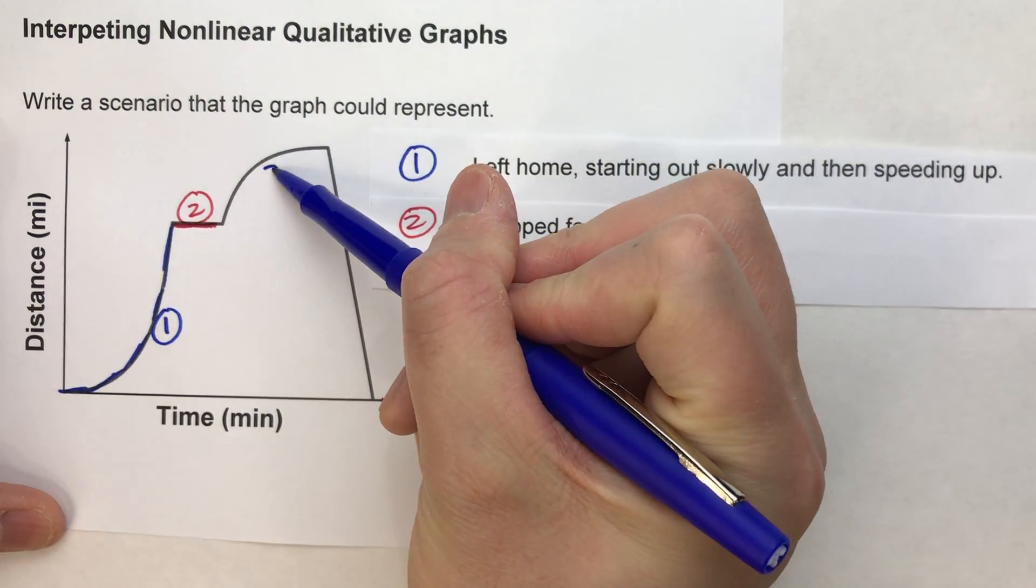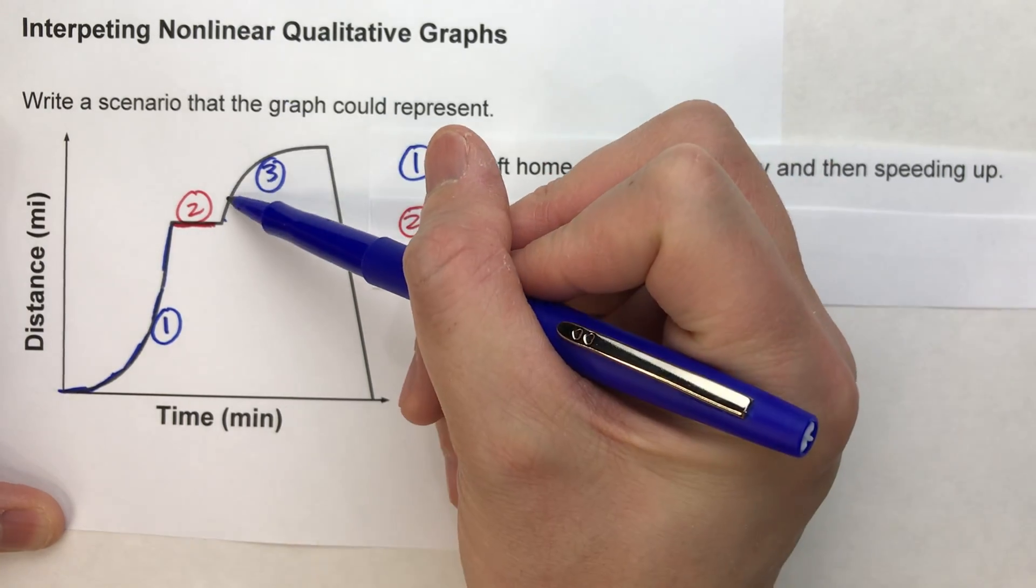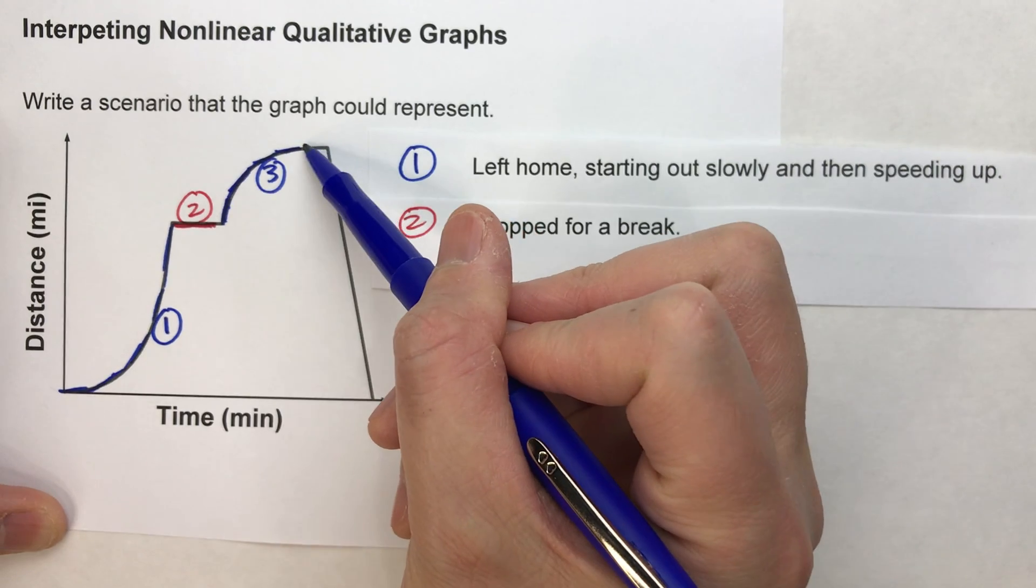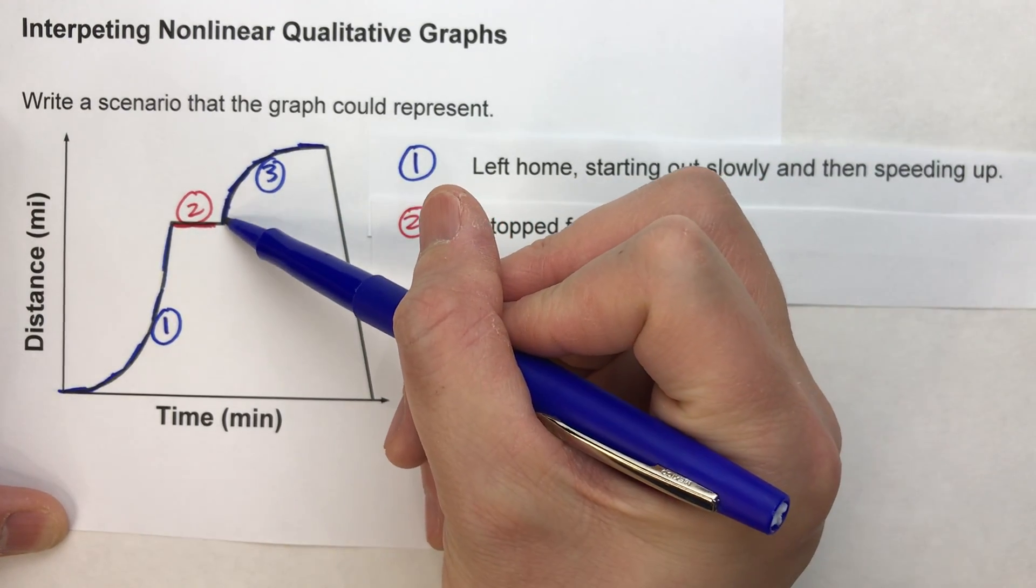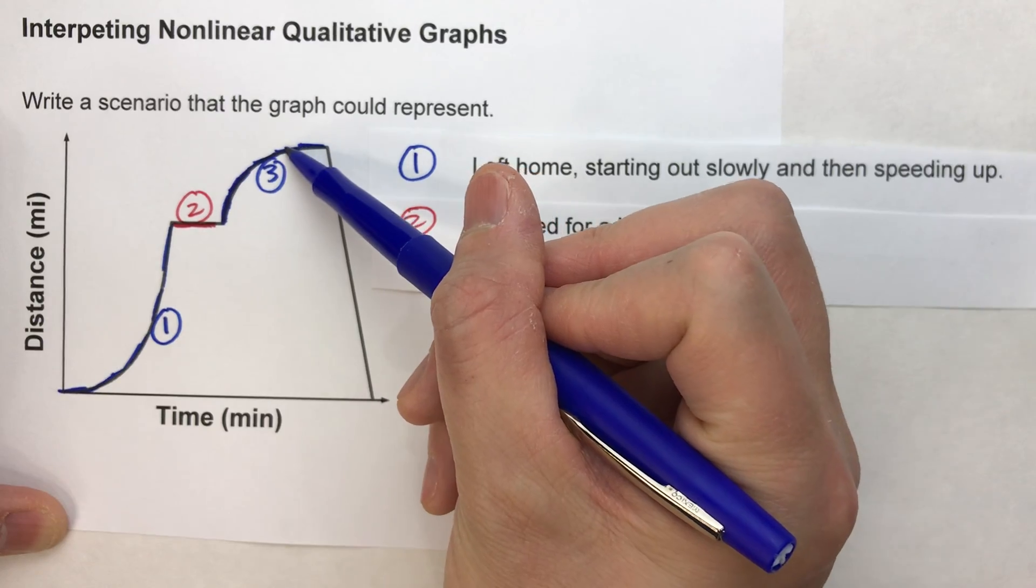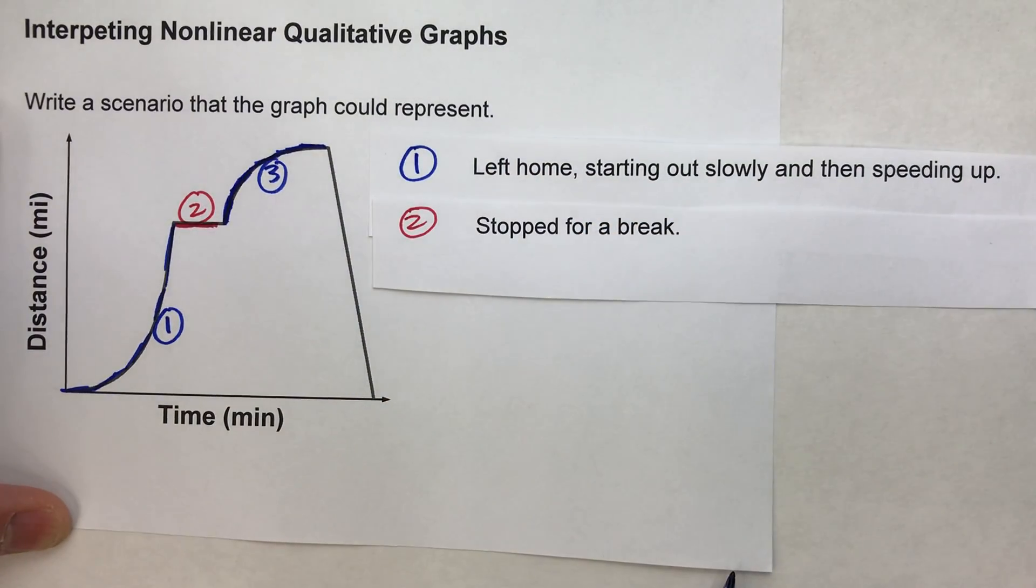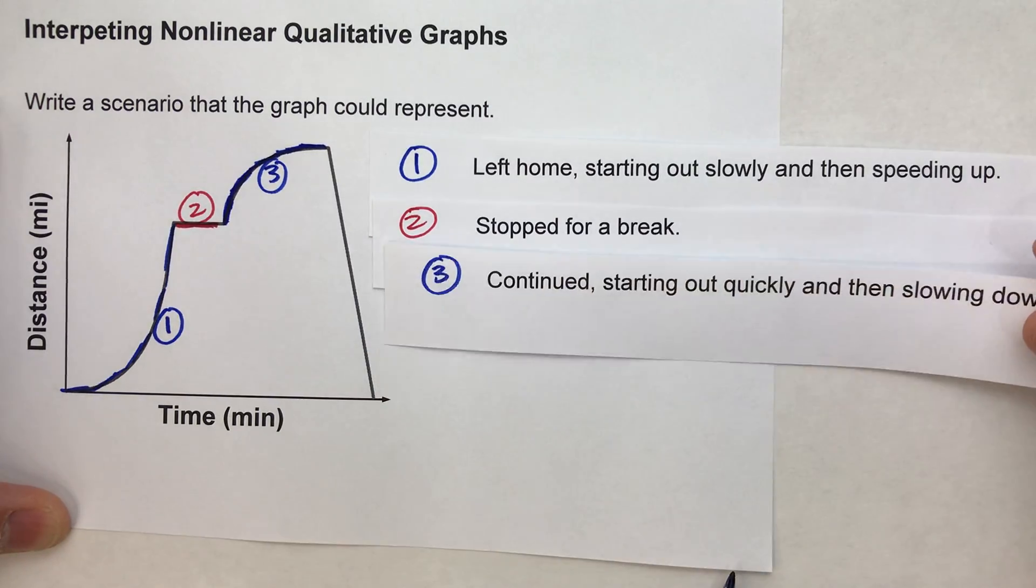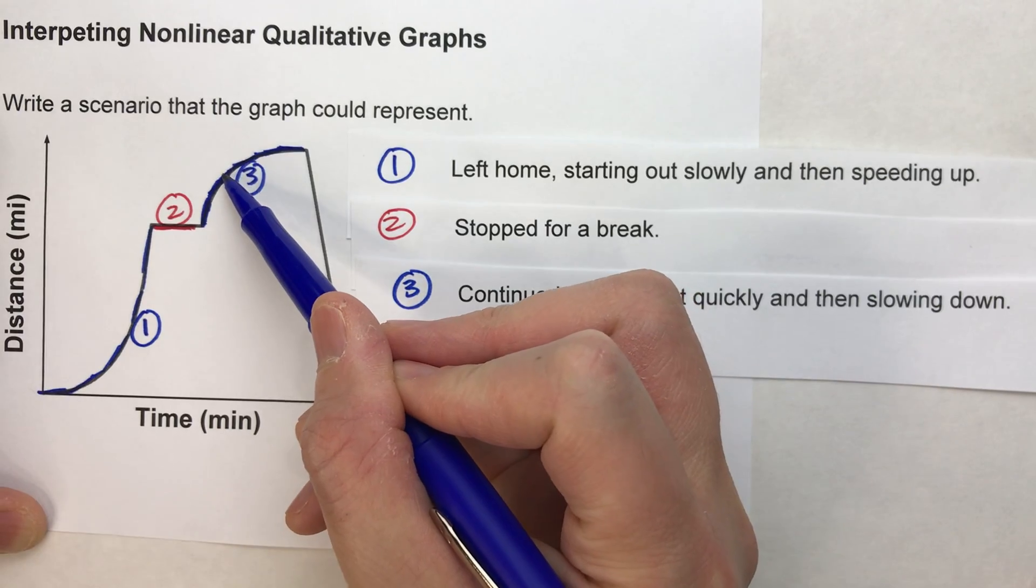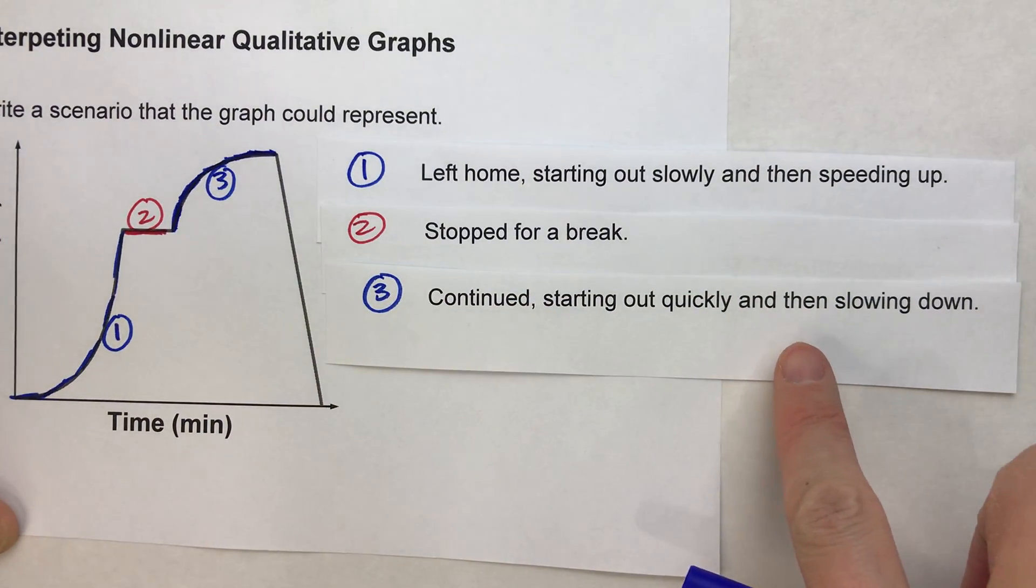Which leads us to the third interval right here. And notice another curved section. This one starts out steep and then starts getting less steep, less steep, less steep, and less steep. So it's increasing very quickly at first, but then increasing less and less steep. So we're slowing down a bit. So first we're starting out quickly. That's why it's starting out so steep. But then notice it gets flatter and flatter and flatter. That means we're slowing down.